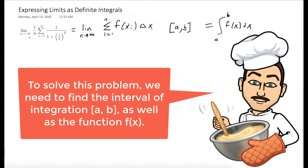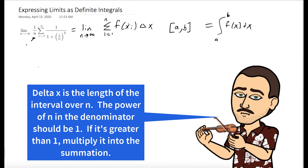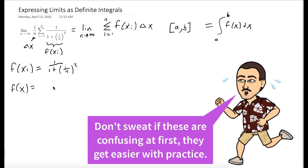The first thing we should know is we could treat 1 over n as delta x. Then the inside will be f of x sub i. This means f of x sub i is 1 over 1 plus i over n, squared. So we could say f of x is equal to 1 over 1 plus x squared, where x sub i is equal to i over n.